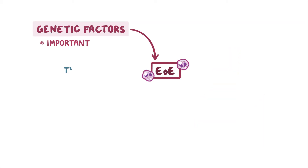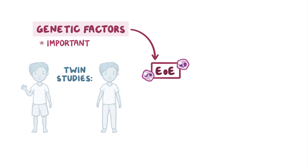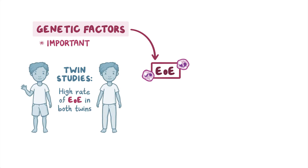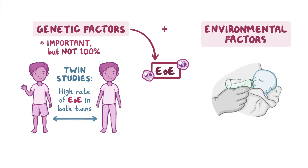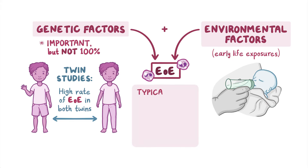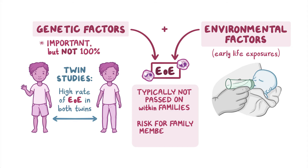Genetic factors are important in EOE, as demonstrated by twin studies which show a high rate of EOE in both twins, but this is not 100%, and environmental factors, especially early life exposures, play a role in developing eosinophilic esophagitis. EOE is typically not passed on within families, and the risk for family members of a person with EOE to develop EOE is less than 5% unless there is an affected twin.